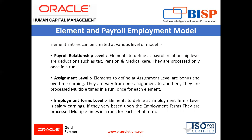What are the element and payroll employment models? At the payroll relationship level, elements are defined as deductions such as tax, pension, and medical care. They are processed only once in a run. At the assignment level, we have bonus and overtime earnings, which vary from one assignment to another.